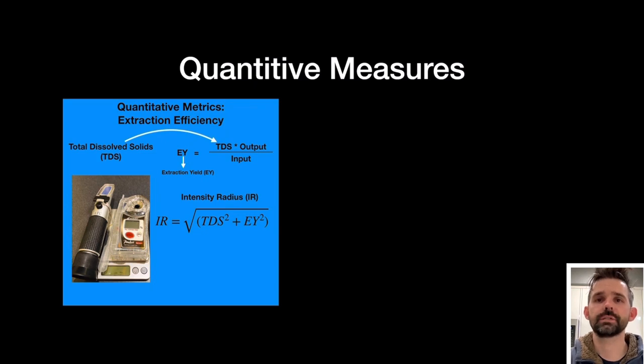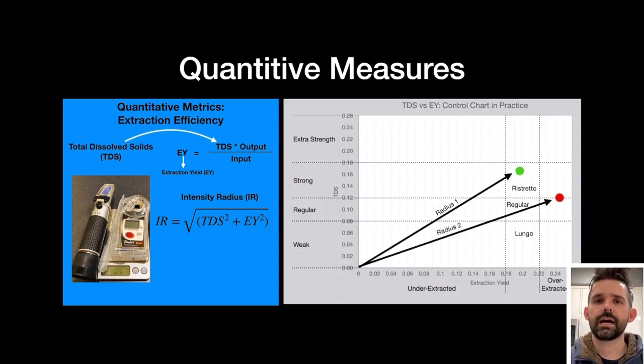For quantitative metrics, I use total dissolved solids, which you can then use to derive extraction yield. This is read using a refractometer, either an optical or a digital refractometer. Most of my data is from a digital refractometer. And then I made another metric called intensity radius, which looks at the radius from the origin to a data point on the control chart. The control chart compares TDS and extraction yield. This is a way to normalize between either slight differences in ratio or very large differences in brew methods, like pour over versus espresso.